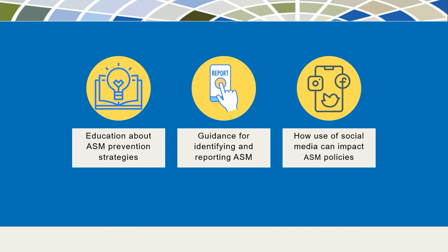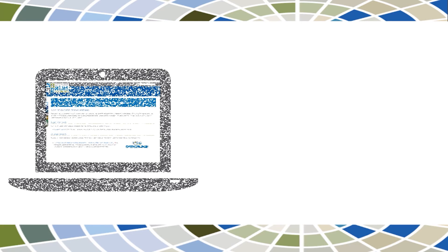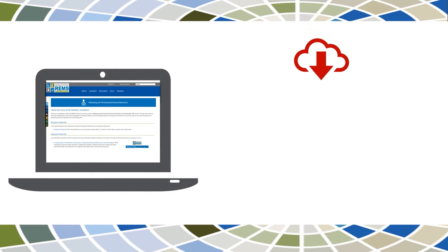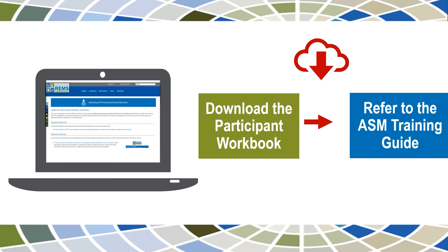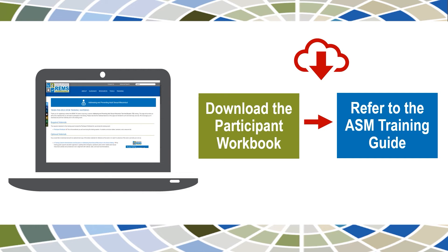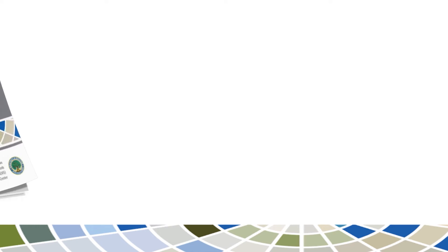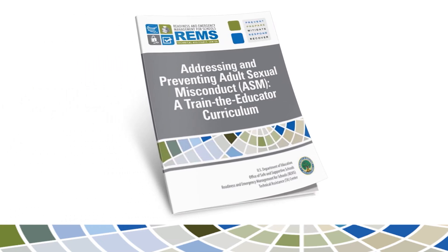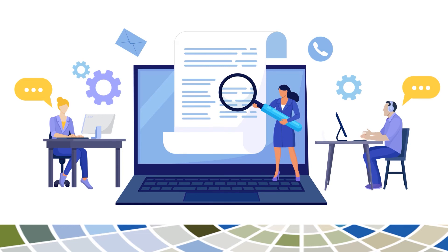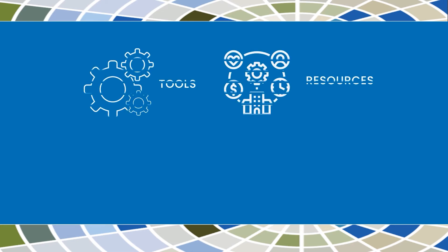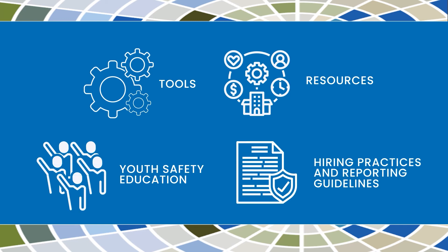You will have the opportunity to apply what you have learned in interactive discussions. When you registered for this training, you should have received a registration confirmation with information on accessing the training materials online. The main resource you will refer to in the training is the participant workbook, which includes presentation slides helpful to have on hand during the training day. You can view them virtually by bringing a laptop or tablet with the downloaded materials, or in hard copy by printing them out ahead of time. The participant workbook also includes a resource list, which provides descriptions and links to tools and resources on ASM and related topics such as youth safety education, hiring practices, and reporting and allegations.